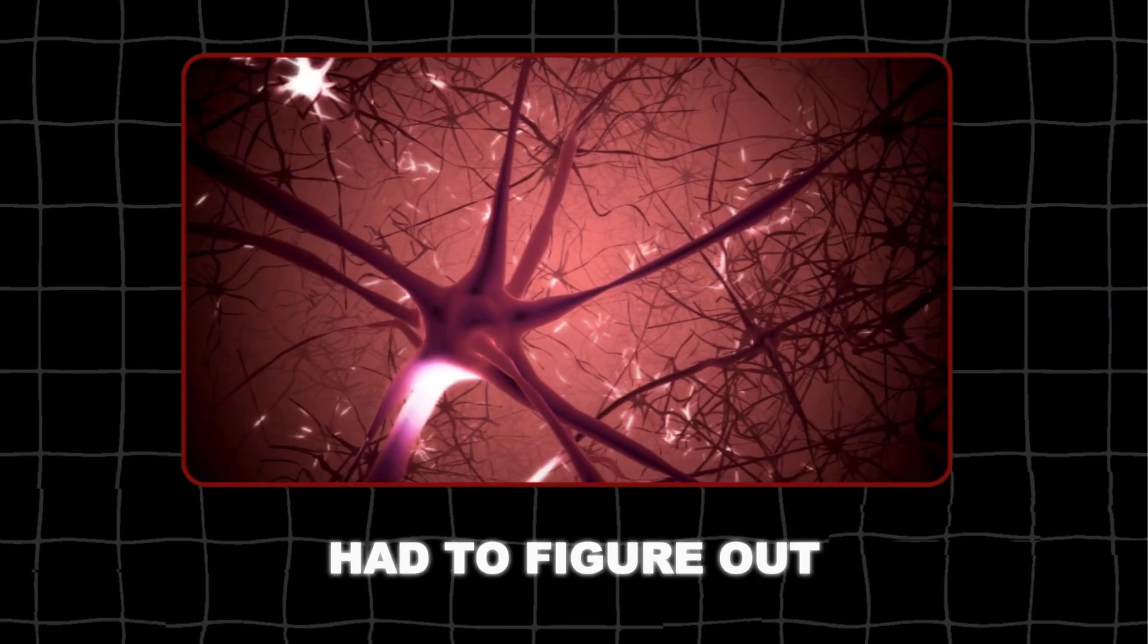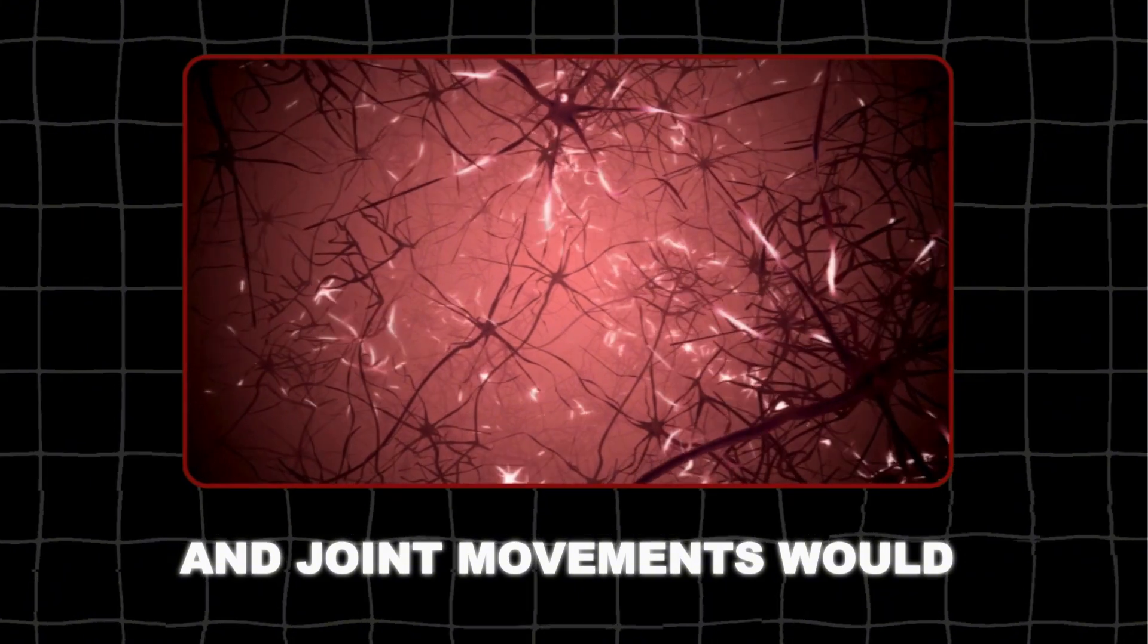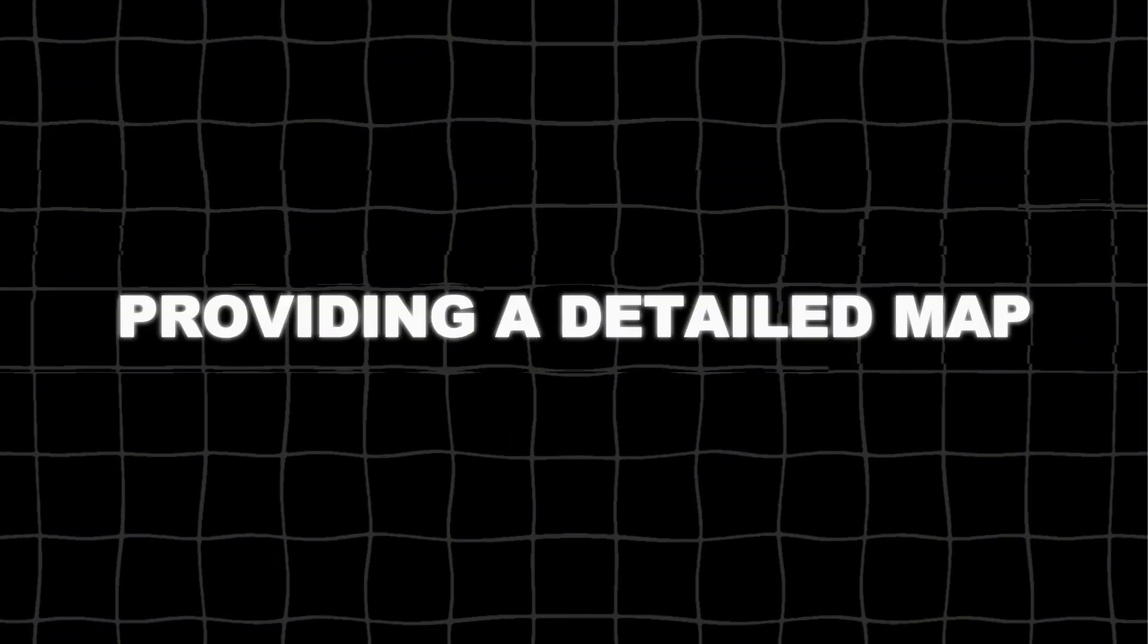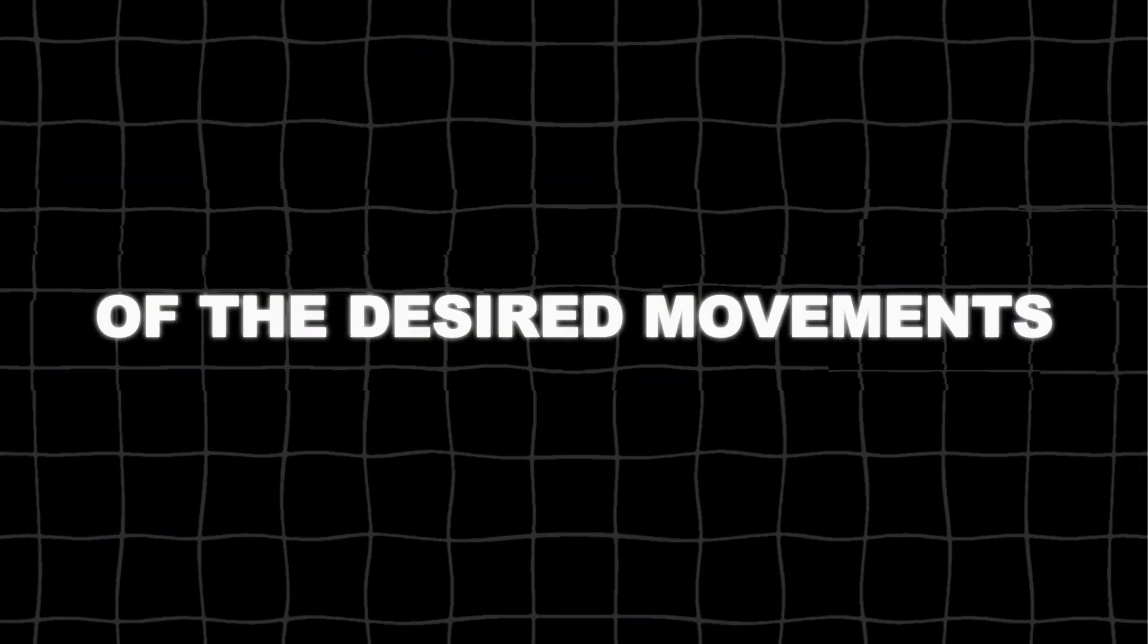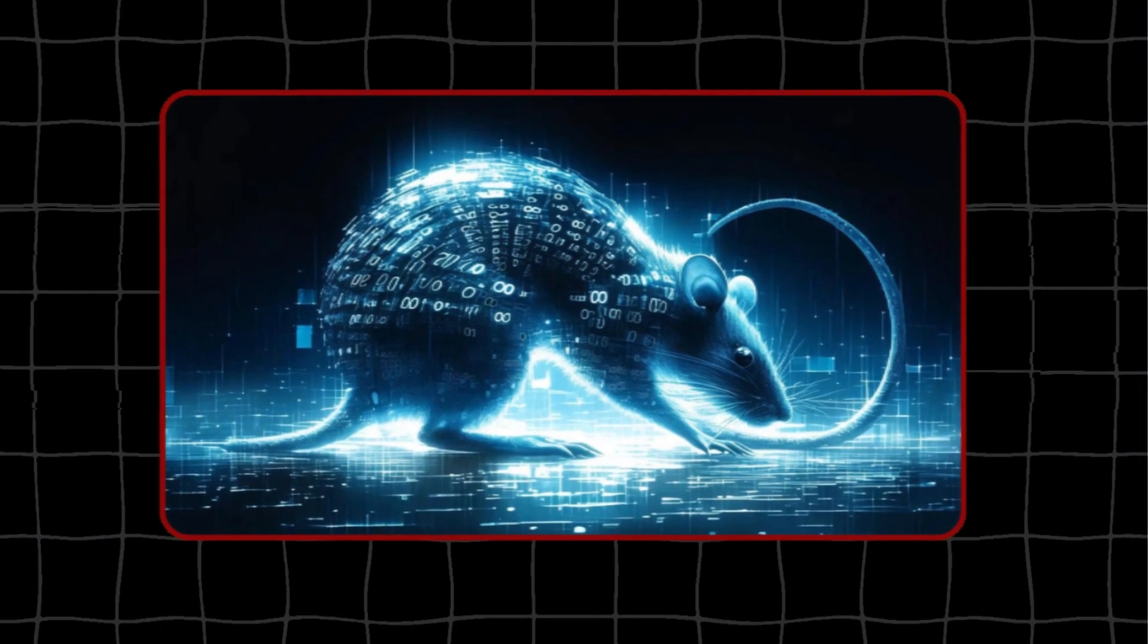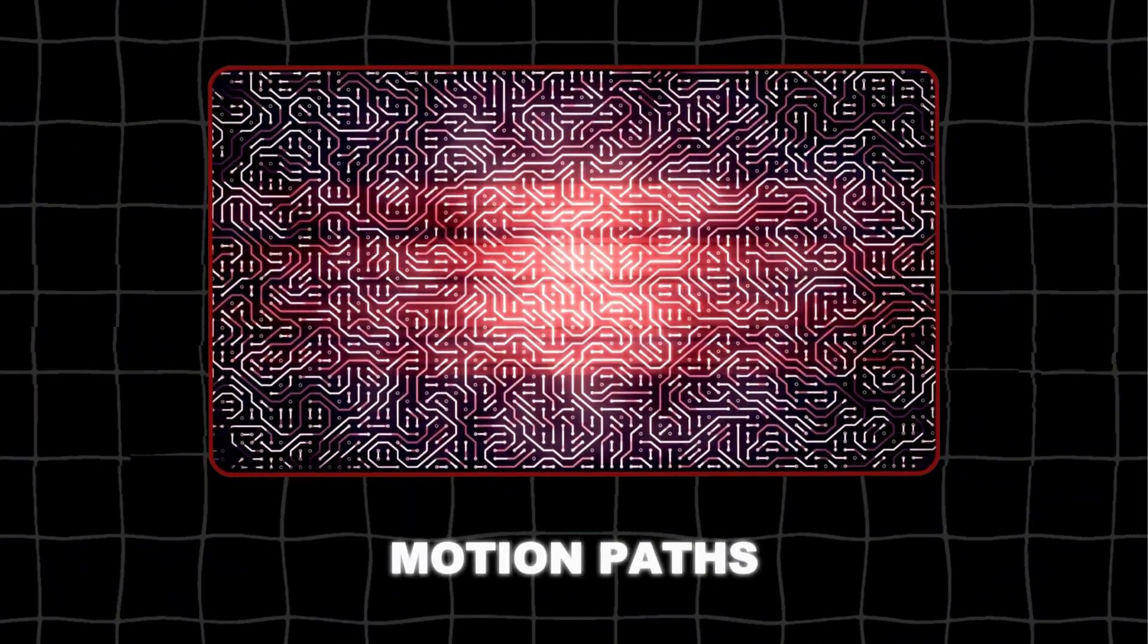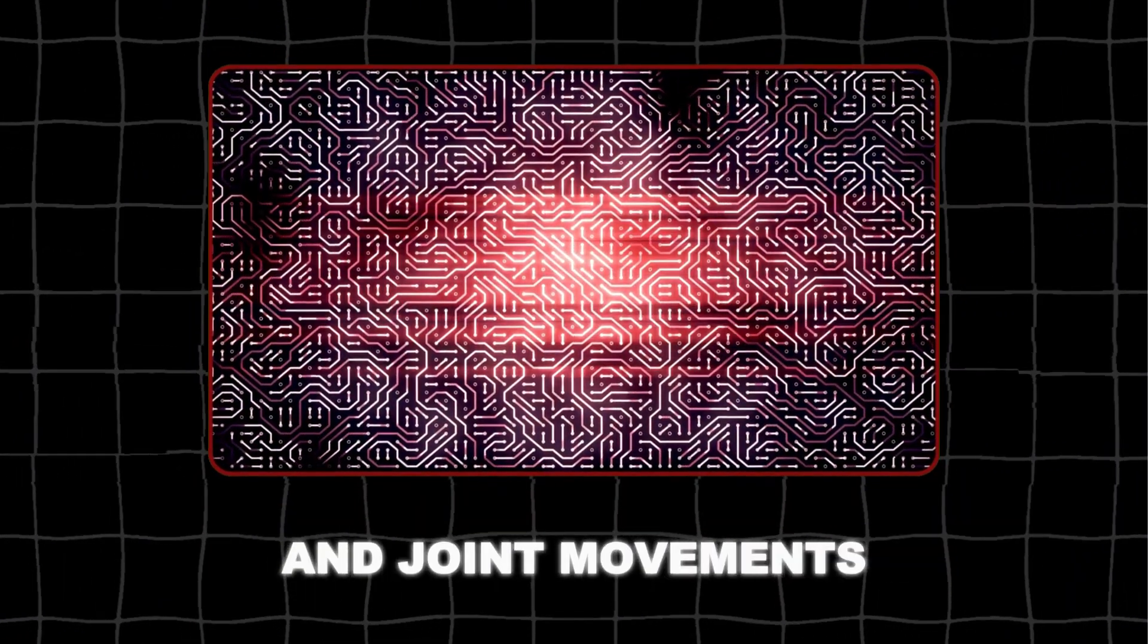The neural network had to figure out which muscle contractions and joint movements would result in the rat walking, running, or performing other tasks. The researchers provided the virtual rat's neural network with reference motion trajectories derived from the real rat data. These trajectories served as inputs, providing a detailed map of the desired movements the virtual rat needed to reproduce. The neural network had to learn how to convert these motion paths into coordinated muscle actions and joint movements.